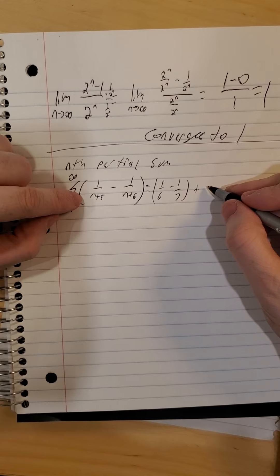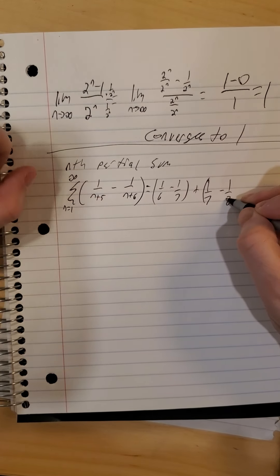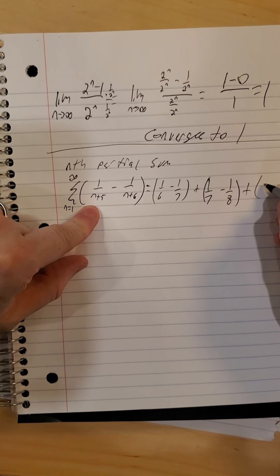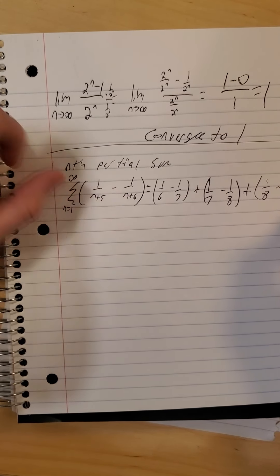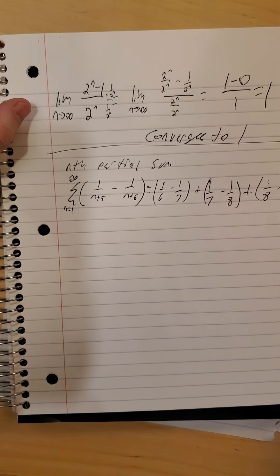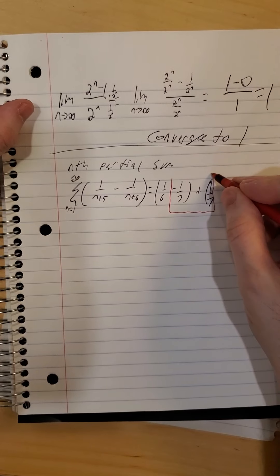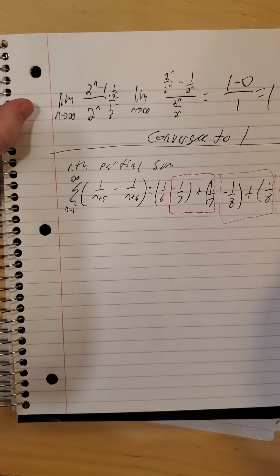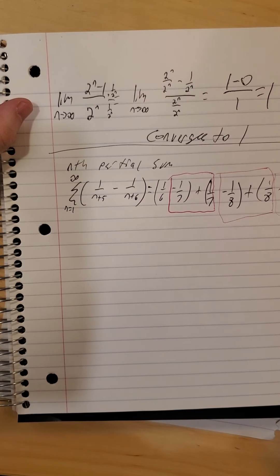If n is 2, we have 1/7 minus 1/8. If n is 3, we have 1/8 minus 1/9. Now as you can see: minus 1/7 plus 1/7 drop, minus 1/8 plus 1/8 collapse, minus 1/9 plus 1/9 collapse — everything but the very first and very last terms will basically drop out.